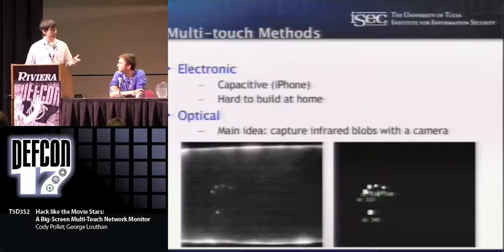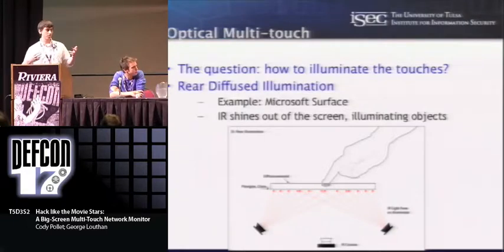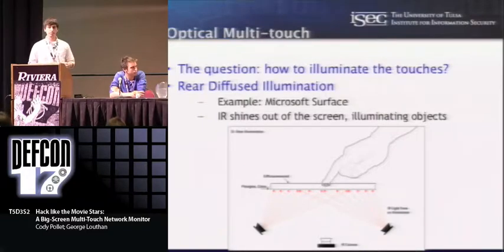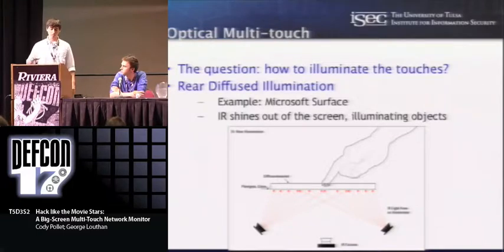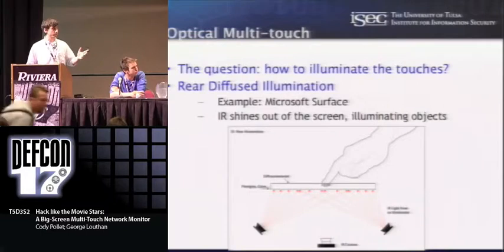There are a few different optical methods. The one used in the Microsoft Surface is called diffused illumination. All the methods have in common an infrared camera that watches the back of the screen and tracks blobs of light. With diffused illumination, there's a very bright infrared light source inside a box with cameras watching the back. You diffuse the light across the surface so the cameras see an even tone. When something touches the surface, it reflects a bit more light back — you're watching for contrast — and then you can track this in software.